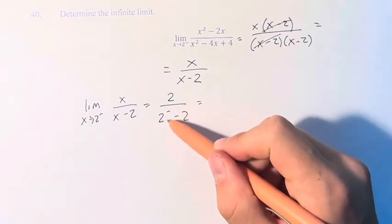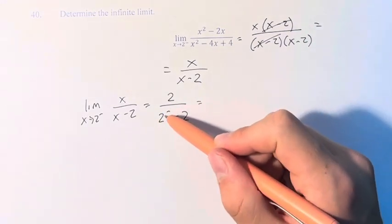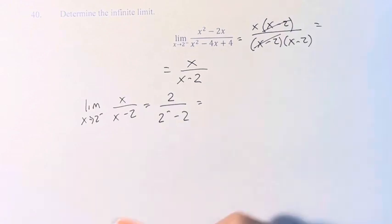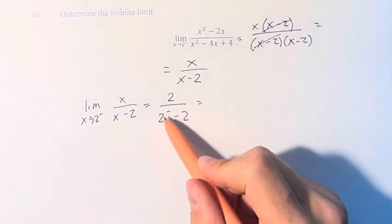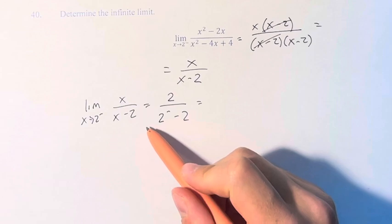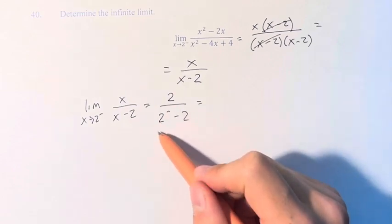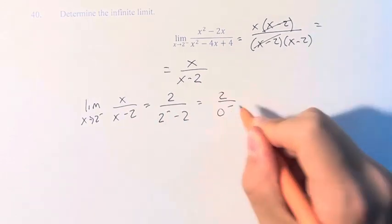So if we're approaching 2 from the left, that means we have values smaller than 2. It's getting closer and closer to 2, but they're still smaller than 2. Therefore, when we subtract 2 from that, we're getting a number not at 0, but very slightly less than 0. So we're approaching 0 from the left.